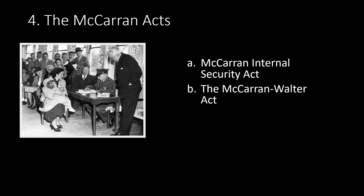The McCarran Acts. Congress passed the McCarran Act — the Internal Security Act — over Truman's veto in 1950. This act required communist organizations to register with the Justice Department, barred immigration by those who were members of totalitarian parties, and called for communists to be put in concentration camps in case of national emergencies. The McCarran-Walter Act, the Immigration and Nationality Act of 1952, played on similar fears. It renewed the national origins quota system established by the Immigration Act of 1924, favoring immigrants from northern and western European countries.